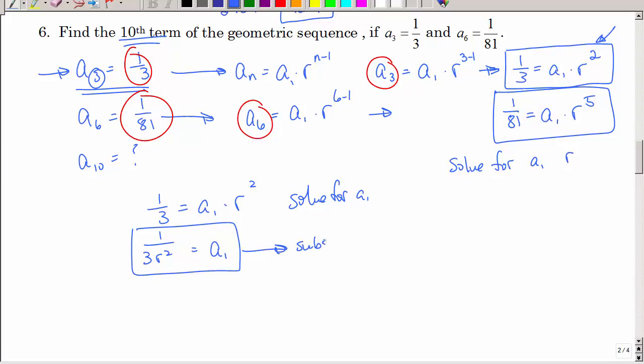So, I'm going to do that by dividing by r squared. So, I have 1 over 3 r squared equals the first term. And then, I'm going to substitute it into the second equation. So, 1 over 81. And in place of a1, I'm going to replace it with 1 over 3 r squared multiplied by r to the fifth power. Now, let's just do some algebra. Reduce that. And that's going to be r cubed. So, I have 1 over 81 equals 1 third times r cubed.